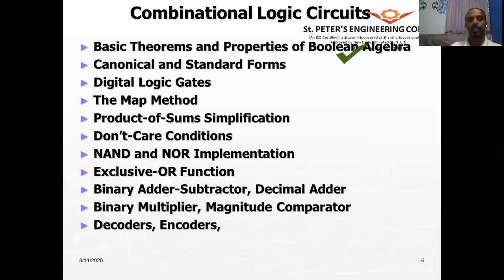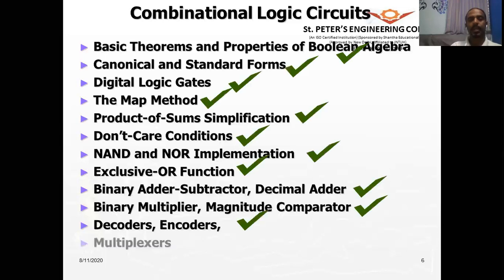In this session we have covered encoders: they take up to 2^n inputs and convert them into n outputs, performing the reverse process of a decoder. Encoders are used in communication systems for encoding at the transmission side and decoding at the reception side, protecting data from tampering. We have one more topic remaining in this unit — multiplexers — which we will cover in the next session. Thank you for your patience.